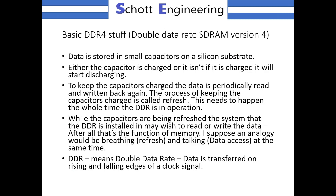In a double data rate memory, data is stored on small capacitors on a silicon substrate. Either the capacitor is charged or it isn't, and if it's charged, it's going to start discharging. To keep the capacitors charged, the data is periodically read and written back again. The process of keeping capacitors charged is called refresh.